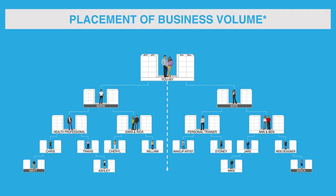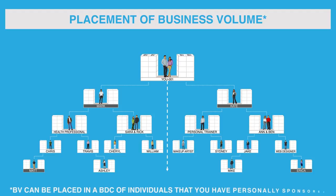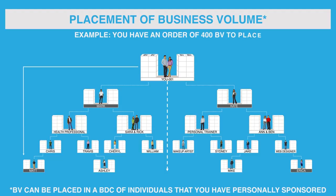An additional feature of the compensation plan is the ability to place BV and IBV within your organization into business development centers of those people you personally sponsored. For example, you or a customer places an order creating 400 BV. You have the ability to place the 400 BV into Matt's business development center. Therefore, Matt gets credit for 400 BV. Furthermore, the BV is not only credited to Matt, but will continue to flow upward and be 100% credited to each qualified unfranchise owner, including yourself. As you place new personally sponsored unfranchise owners in depth, along with the ability to place BV and IBV, you strengthen your organization.